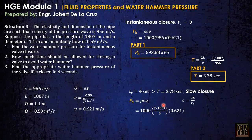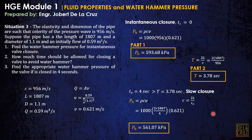Then we substitute this recalculated C into the water hammer formula: ρ times C (= 2L/TC) times velocity B. And we compute the answer.